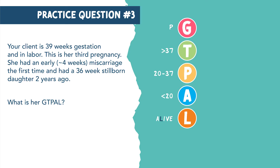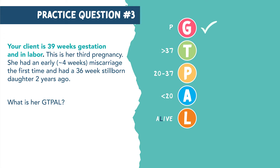Let's do one more practice question. Your patient is 39 weeks gestation and is in labor. This is her third pregnancy. She had an early miscarriage the first time and had a 36-week stillborn daughter about two years ago. What is her GTPAL? So let's look at her most recent pregnancy — her third. She's currently pregnant, which gets a tally next to G. But she has not delivered this baby yet, so don't let it trick you — she's in labor, so we don't mark it as term or living yet.